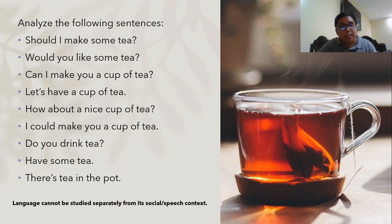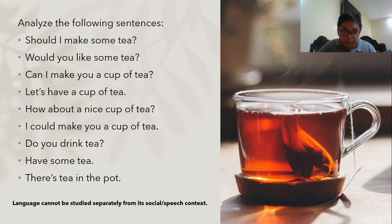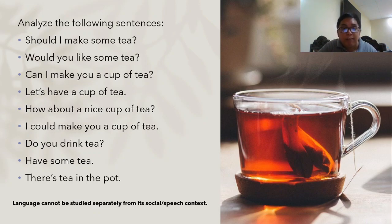Now, analyze the following sentences. There are different ways to ask or invite someone to have tea with you: 'Should I make some tea?' 'Would you like some tea?' 'Can I make you a cup of tea?' 'Let's have a cup of tea.' 'How about a nice cup of tea?' 'I could make you a cup of tea.' 'Do you drink tea?' 'Have some tea.' 'There's tea in the pot.' There are many ways to invite someone to have tea, which tells us that language cannot be studied separately from its social or speech context.